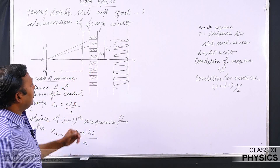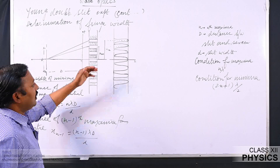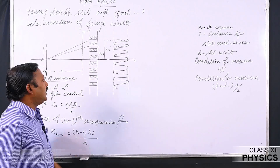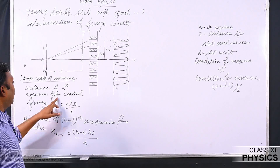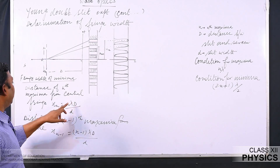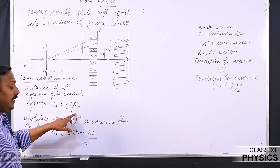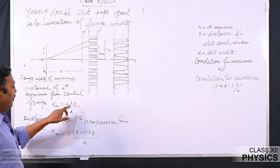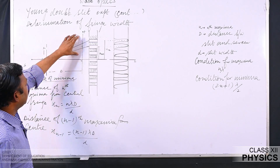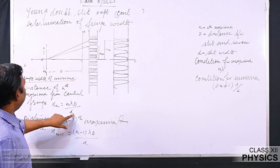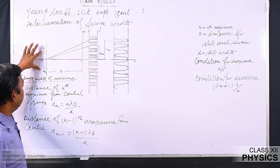We calculated the distance of nth as well as n-minus-1th fringes corresponding to maxima and minima. Now we will try to find out the width of the fringes. The distance of the nth fringe for maxima, calculated in our previous class, is given by x_n equals n·lambda·D divided by d, where lambda is the wavelength, D is the distance between slit and screen, and small d is the separation between the two slits.